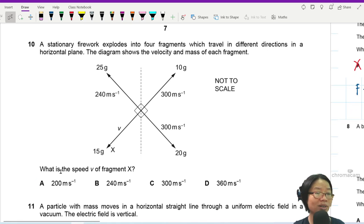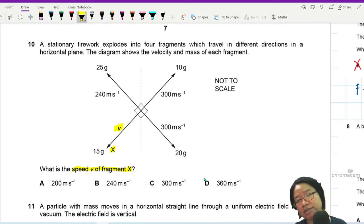What is the speed of fragment X? We need to find what is this value of v. There are several good news. Number one, everybody is 90 degrees. When everyone is 90 degrees, you don't have to resolve anybody. Please don't resolve anything when everything is 90 degrees. It is perfect.